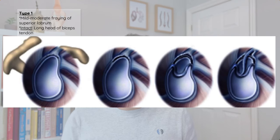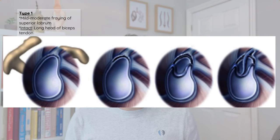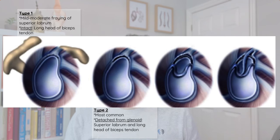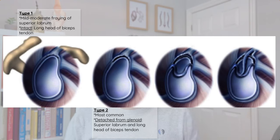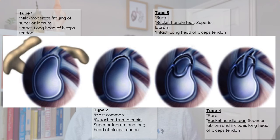Management depends on the severity of the injury, which Snyder classified from grade one to grade four. A grade one lesion involves mild to moderate fraying of the superior labrum with the long head of biceps tendon intact — present in a high percentage of the population even without symptoms. Type two is the most common, where the superior labrum and long head of biceps tendon become detached from the glenoid. Types three and four are very rare: type three involves a bucket-handle tear of the labrum with the biceps tendon intact, while grade four includes a bucket-handle labral tear that also involves the long head of biceps tendon.